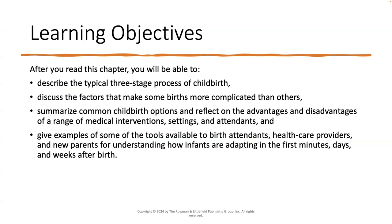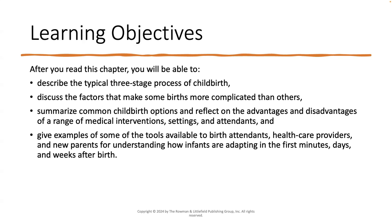Our learning objectives for this week are to describe the typical three-stage process of childbirth, discuss the factors that make some births more complicated than others, summarize common childbirth options and reflect on the advantages and disadvantages of a range of medical interventions, settings, and attendance. Finally, give examples of some of the tools available to birth attendants, healthcare providers, and new parents for understanding how infants are adapting in the first minutes, days, and weeks after birth — because the birthing process is difficult on the mother and loved ones, but it's also a very big transition for baby as well.